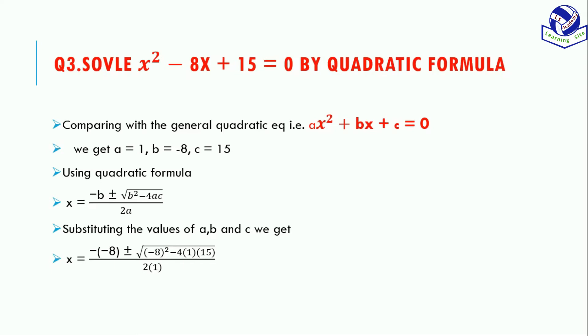The constant c = 15 and a = 1. So x = (-(-8) ± √((-8)² - 4(1)(15))) / 2(1). This equals 8 ± √(64 - 60) / 2.